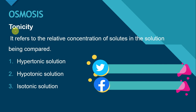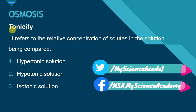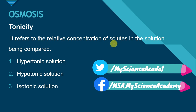Let us see the term tonicity. Osmosis ke rules ko understand karne ke liye hum term tonicity ko discuss karenge. It refers to the relative concentration of solutes in the solution being compared. Tonicity here means the quantity of solutes in the solution. Ek solution mein solute ki jitni concentration ya quantity present hoti hai, usi ko hum tonicity bolte hain.